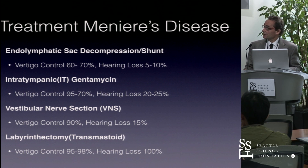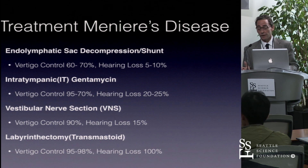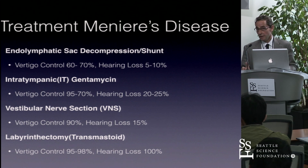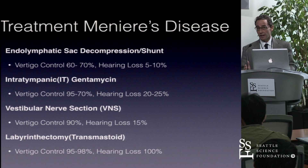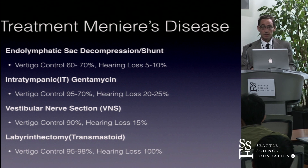In summary, for treatment outcomes in Meniere's disease: endolymphatic sac decompression provides vertigo control in 60 to 70% with a hearing loss risk of 5 to 10%. Intratympanic gentamicin provides vertigo control of 95% early on, declining to about 70% later, with hearing loss risk of 20 to 25% depending on dosing. Vestibular nerve section gives 90% vertigo control with a 15% risk of hearing loss. Transmastoid labyrinthectomy achieves 95 to 98% vertigo control, but sacrifices hearing. Thank you.